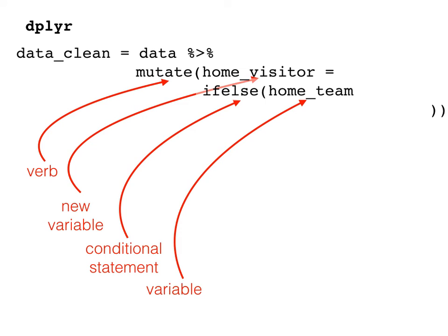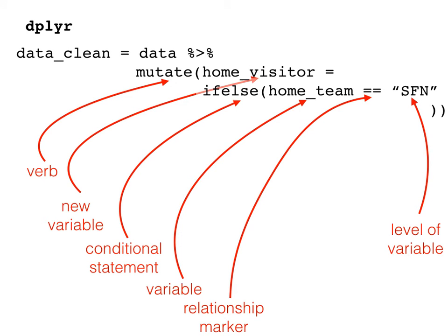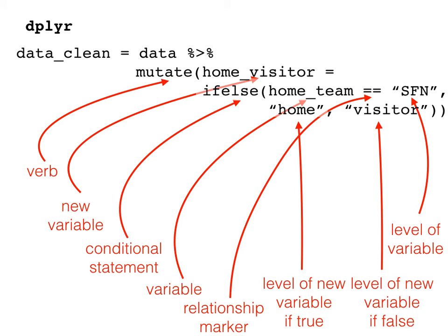That criterion uses variable home_team. And we assess it using a relationship marker. In this case, we use the equal-equal sign to ask whether home_team is equal to a certain level. We've used this earlier in our filter calls. The level we're checking for is SFN, which stands for San Francisco. So we want to know if home_team is equal to SFN. And if it is, then we're going to set our new column, home_visitor, equal to home. So if our conditional statement executes to true, we write home. We also need a value for if our conditional statement executes to false, and that will be visitor. So we've now created a new column, home_visitor, with two levels, home or visitor, dependent on what the value of home_team is.